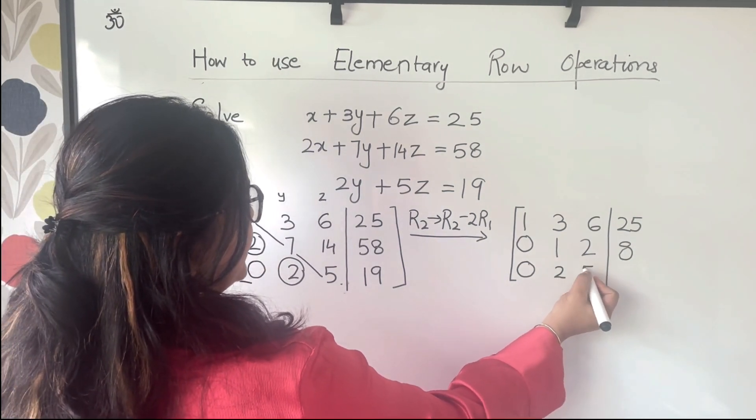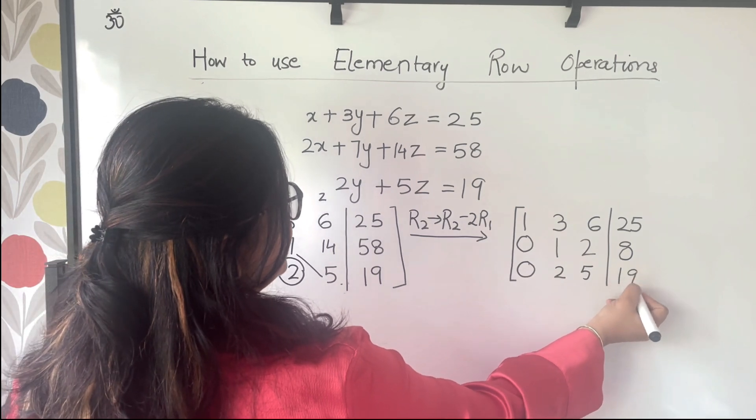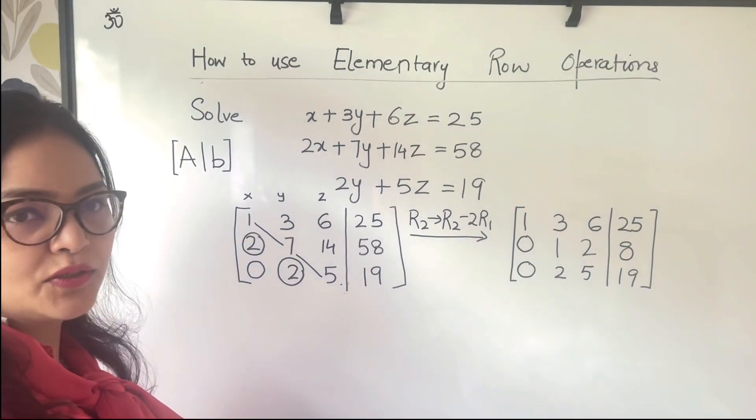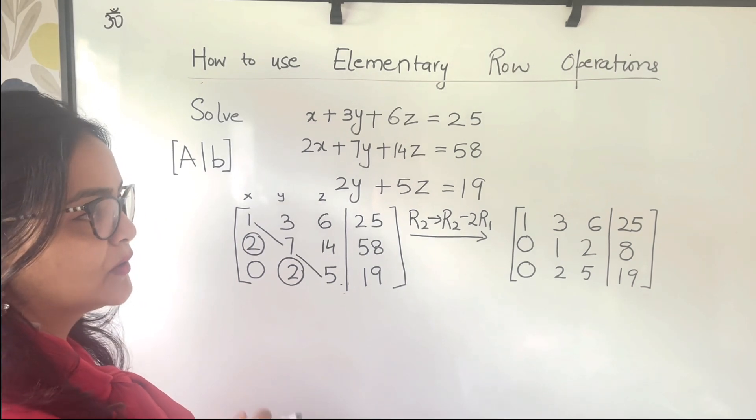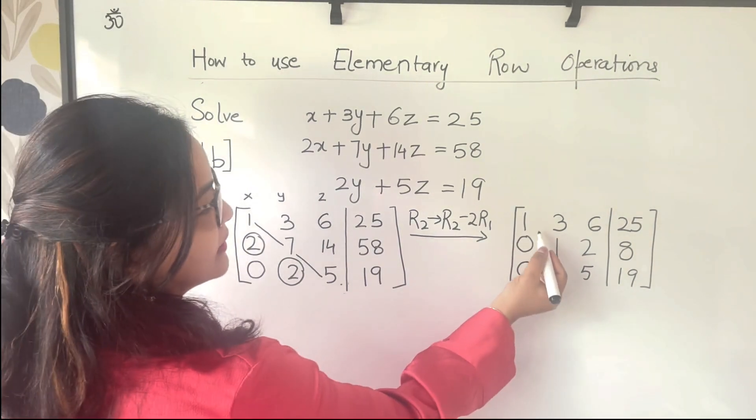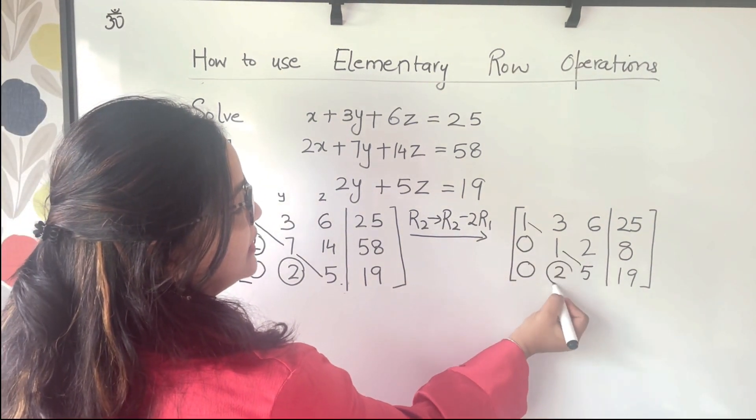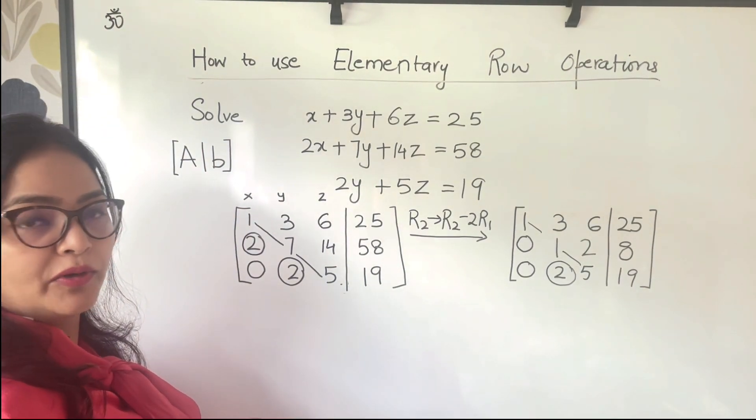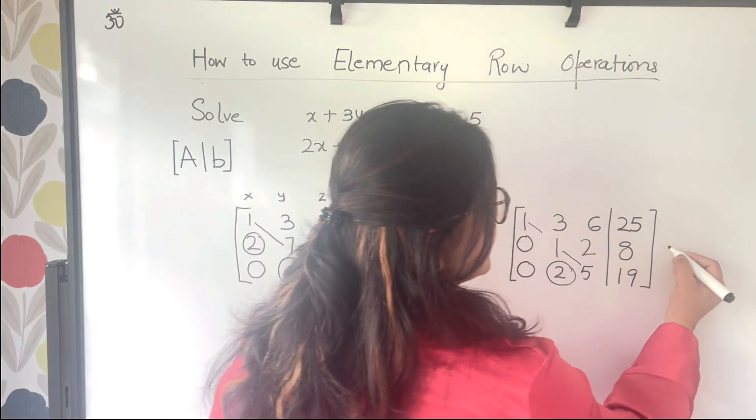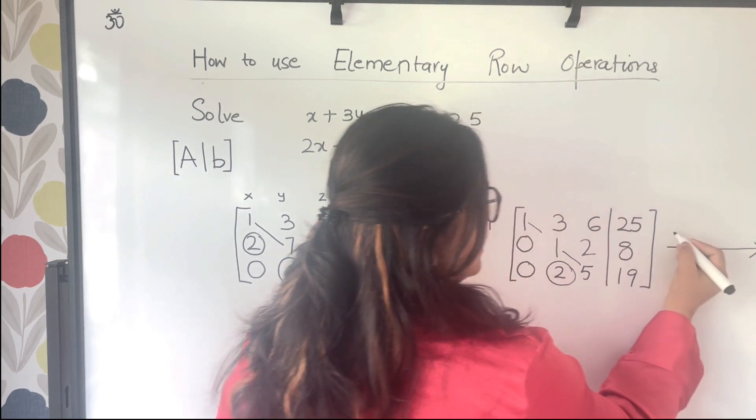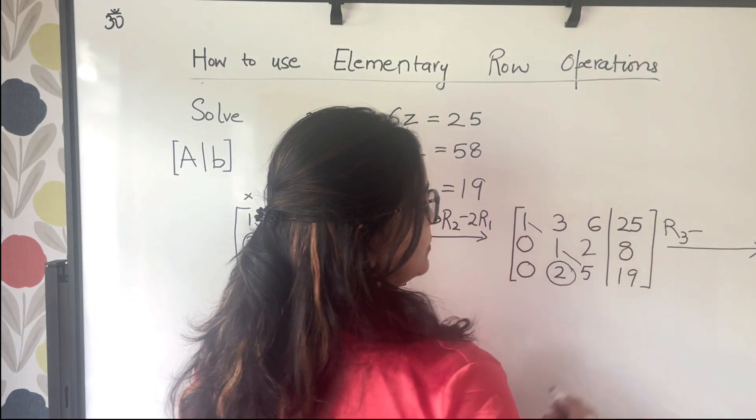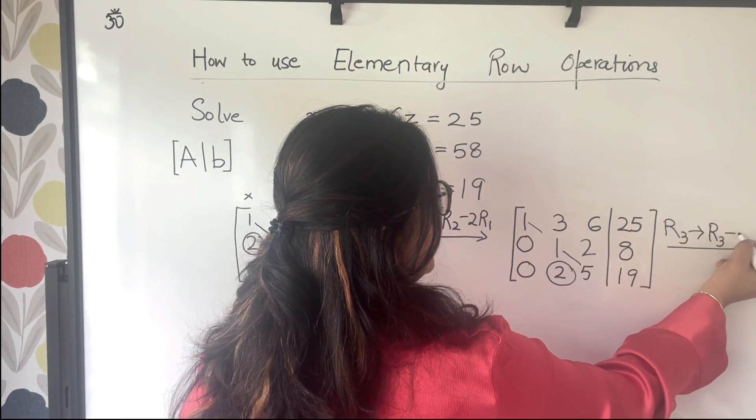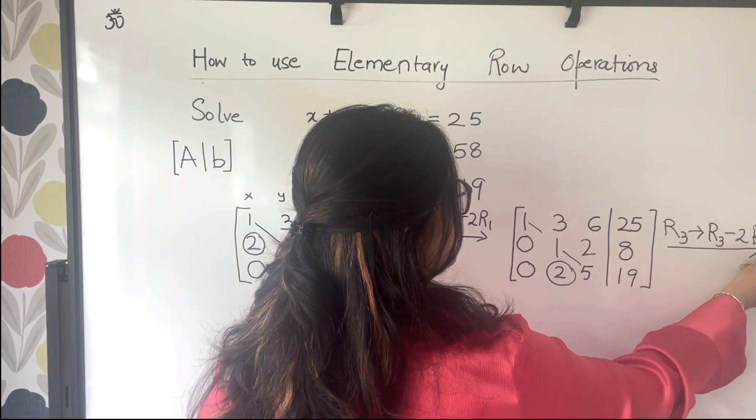And 2, 5, 19 as it is. Next, what you will try to do is to create a 0 here. In order to do that, I am going to use another row operation. And that is R3 goes to R3 minus twice of R2.